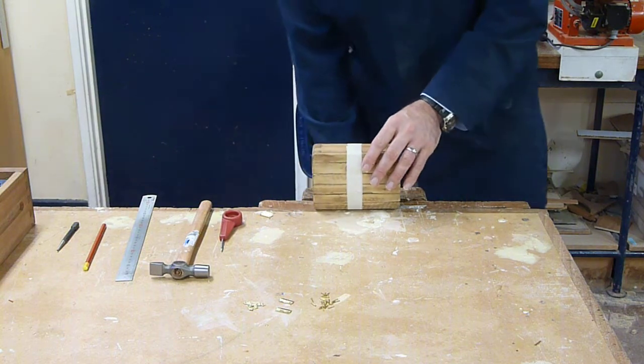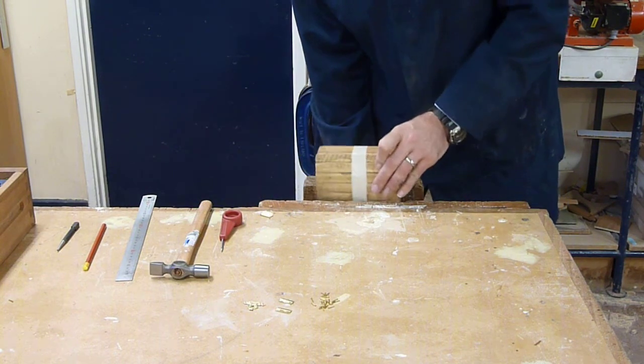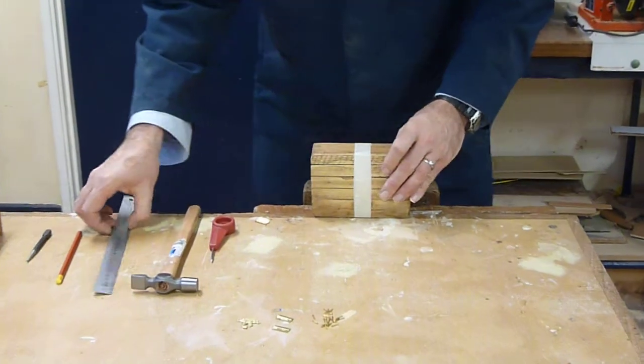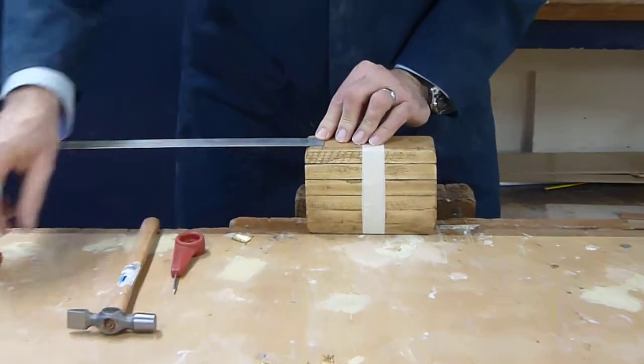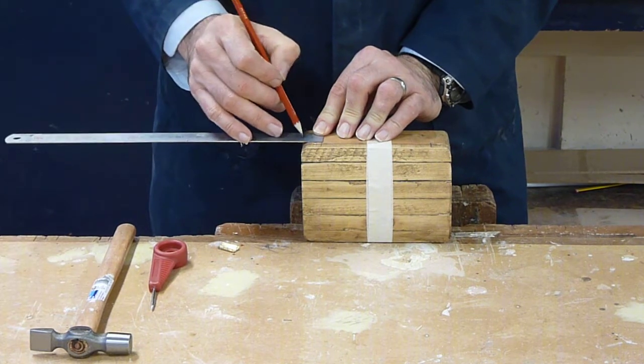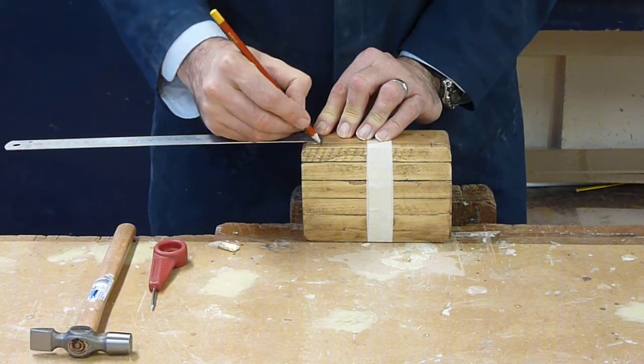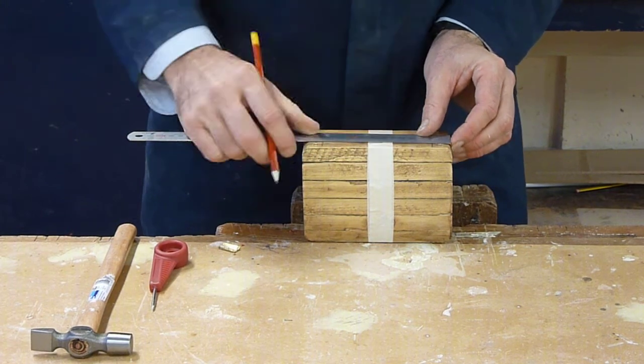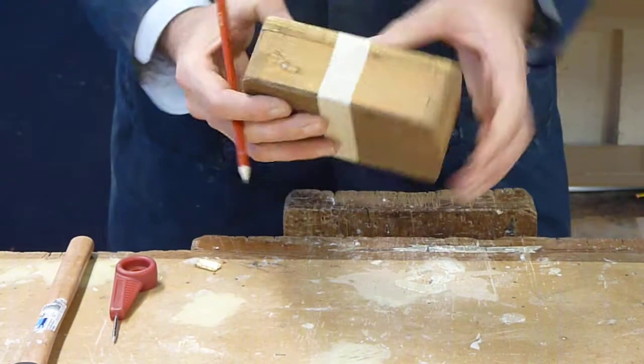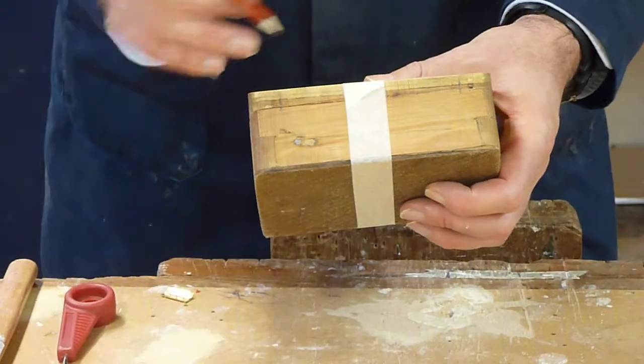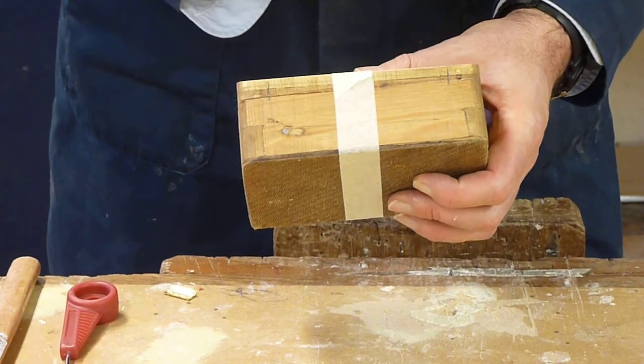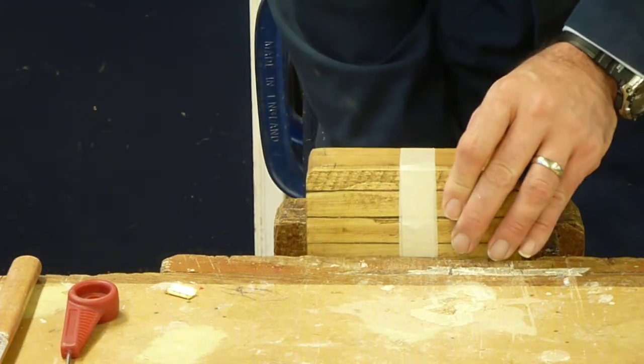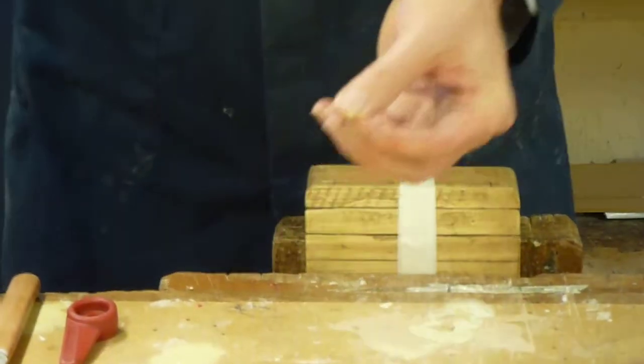I'm now going to place it in the vise and measure 2 centimeters in, that's 20 millimeters, each side from the edge and make a mark. I've measured in 2 centimeters there and 2 centimeters there. I can now put it in the vise and I'm ready to put the hinge on.